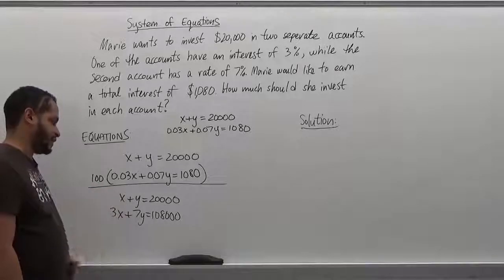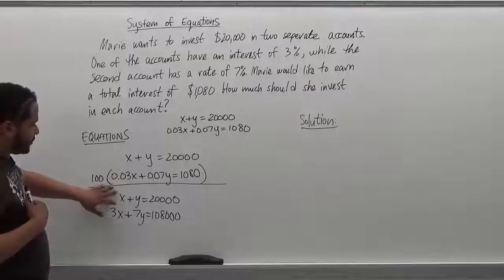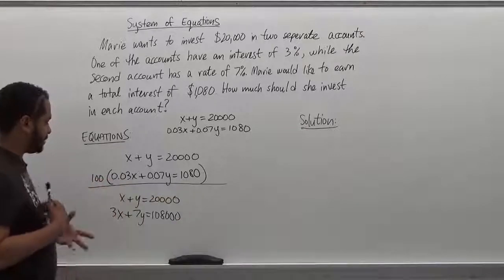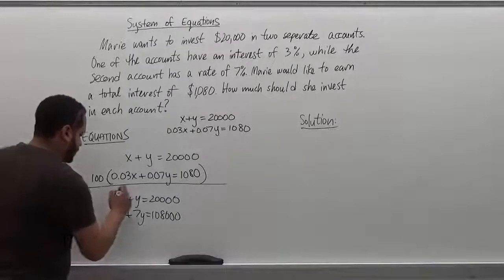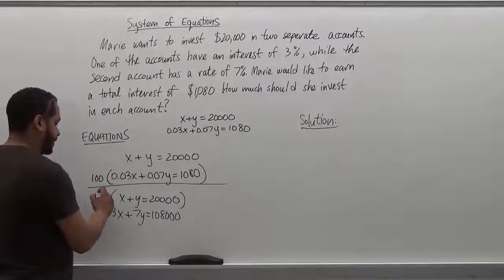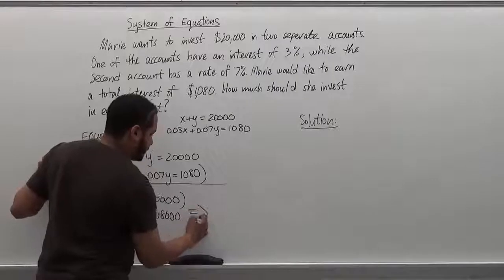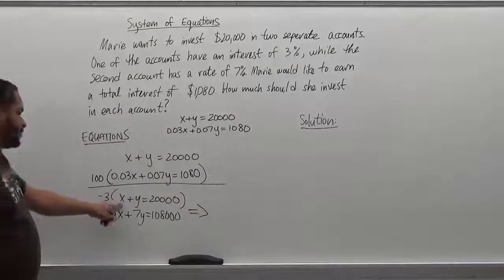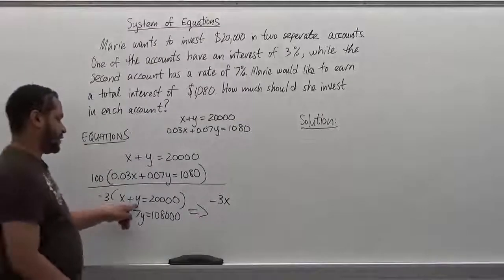So I'm going to multiply this top line by the opposite of this term of x. The x has a three so I'm going to multiply up here by negative three so they can cancel out. So what's going to happen here is I'm going to get negative 3x, negative 3y, negative three times 20,000 is negative 60,000.